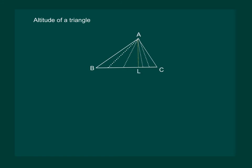So here, AL is the altitude of triangle ABC from vertex A. Similarly, we can draw the altitudes from vertex C and vertex B.